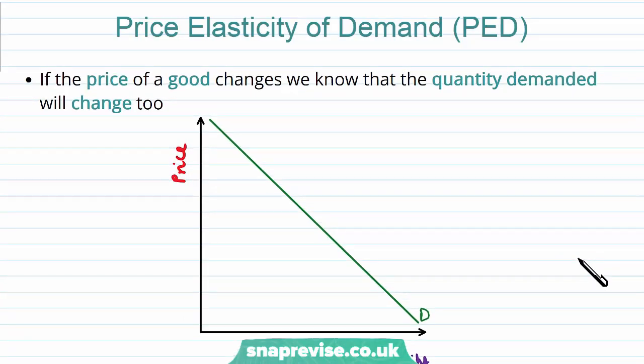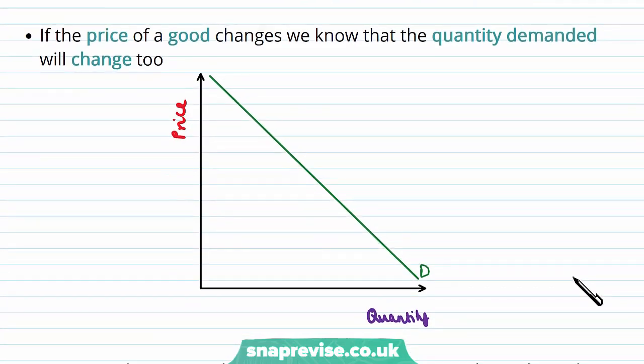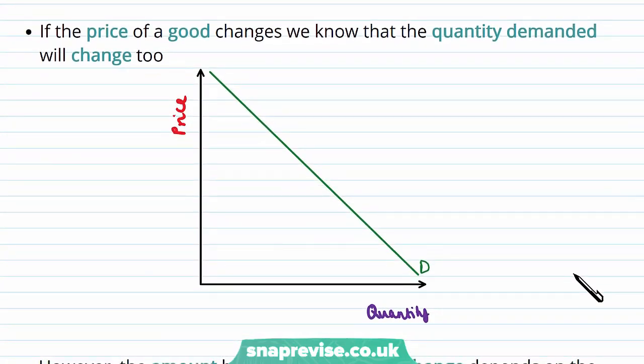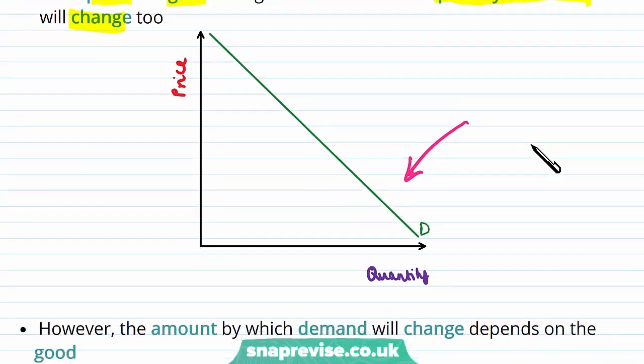When we're talking about the price elasticity of demand, let's start off with what we know about demand. We know that if the price of a good changes, the quantity demanded will change too, which gives us our demand curve here, which is downward sloping. You can go back to a previous video to understand why it is downward sloping.